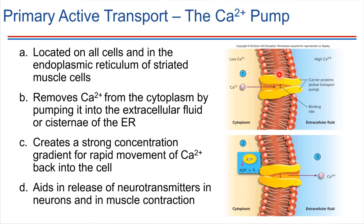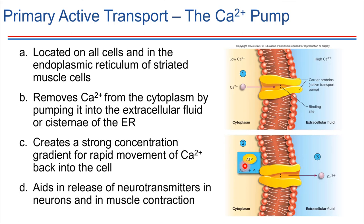Looking at the key points: we've got the membrane here with a carrier protein embedded in it, and this carrier protein has a binding site for calcium ions. Inside the cell in the cytoplasm we have a low concentration of calcium; out in the extracellular fluid we have a high concentration, but nonetheless we want to move calcium outside. The calcium ion binds to the binding site, then the carrier protein undergoes a shape change when ATP is used. ATP is cleaved, inorganic phosphate attaches to the carrier protein causing the shape change, and the calcium ion gets shuttled out to the other side.